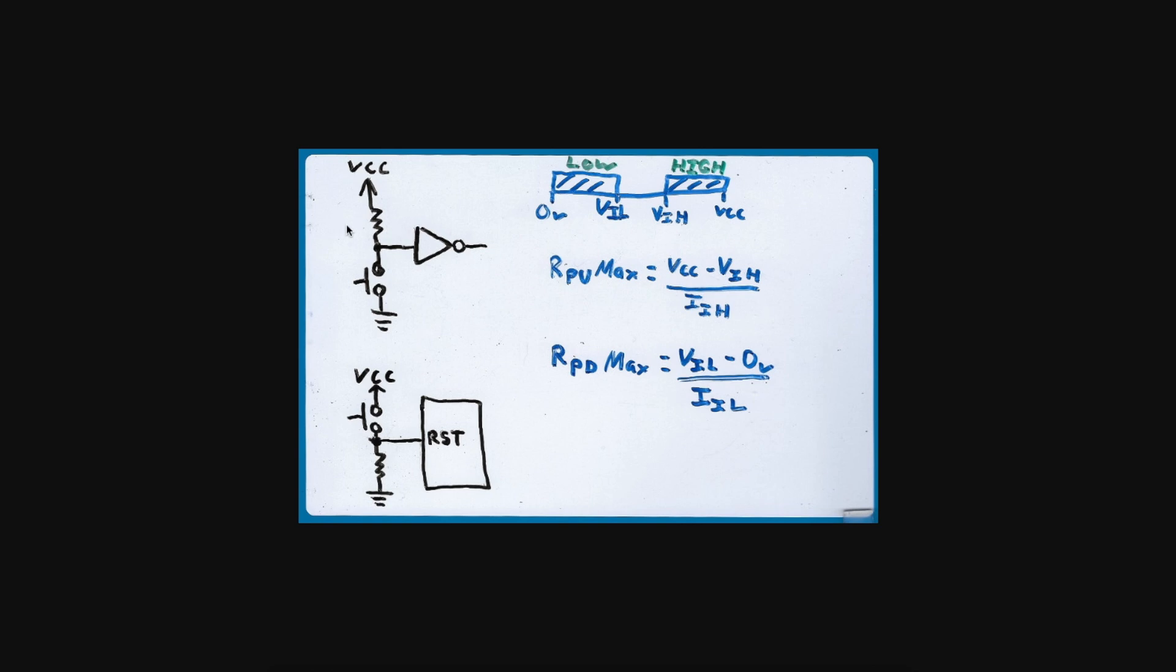So the larger the resistor for a given leakage or input current, the larger the voltage drop, and the further away this input voltage is going to be from your desired high or low. So we need to figure out what's the maximum safe resistor value we can actually use to guarantee the logic level we want.